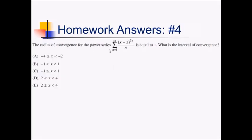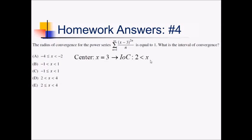For this problem, they gave us the radius of convergence for this power series — they told us it was 1. They want the interval of convergence. Typically if you see a series that's not geometric and they want interval of convergence, you have to use the ratio test to get it down to absolute value less than some number. But here they already gave you the radius of convergence. So we can start with the center and figure out the possible interval using this radius. We have a center of 3, because we have x minus 3 in here. Since our center's 3, that means we're going 1 — the radius — in each direction from 3, giving us endpoints. On the lower end we have 3 minus 1, which is 2, less than x, less than 3 plus 1, which is 4. So we can eliminate answer choices A, B, and C. It's down to D and E.